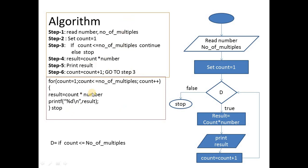The same algorithm is written in C code. Since it repeats, we use a for loop: count = 1, count less than or equal to number of multiples, count++. Then result = count × number, and we print the result. For example, if number of multiples is 5 for number 6, the result will be 6, 12, 18, 24, and 30.